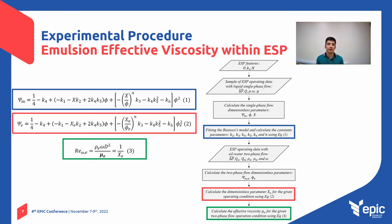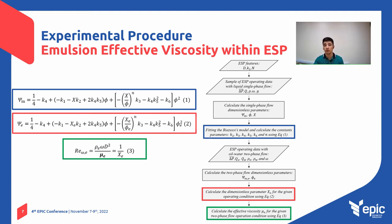An indirect method to determine the emulsion effective viscosity within the ESP was used, which was obtained from the water-oil emulsion performance curves. The viscous performance data were used to determine the parameters of a dimensionless head empirical model for the tested ESP. The calculated values were compared with the effective viscosity obtained from oil and water emulsions, as well as the ESP performance operating with emulsion and oil.